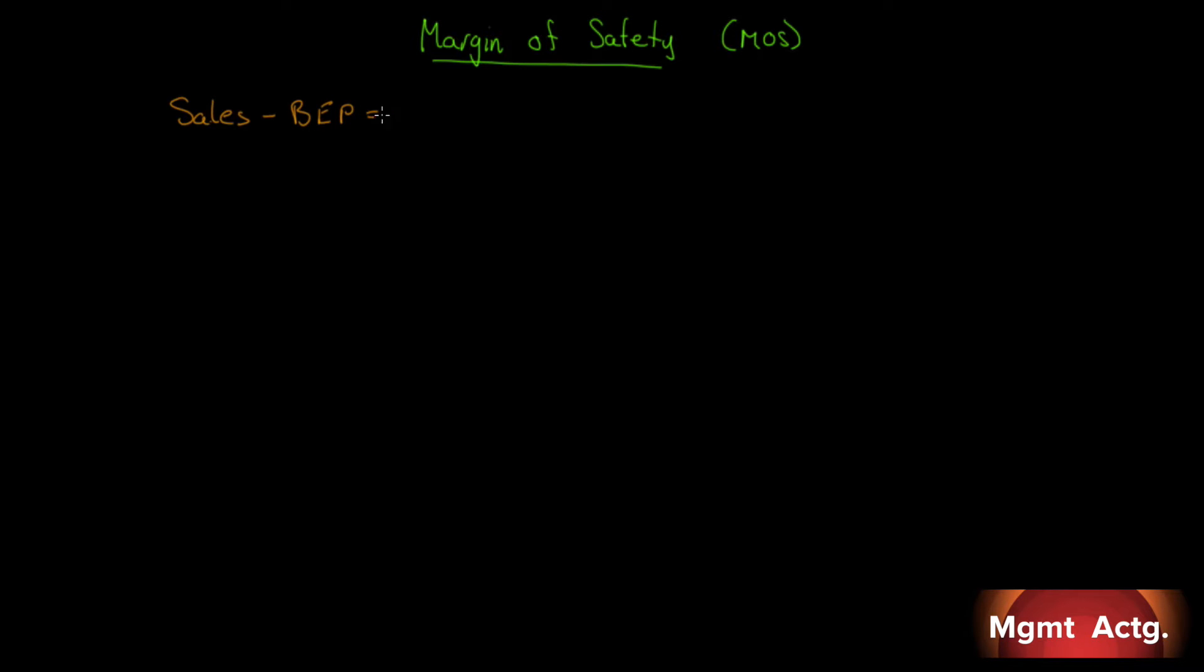Really simple. Sales minus our break-even point in dollars equals our margin of safety. Once we have that, if we take our margin of safety and divide it by sales, we get our margin of safety percentage. Couldn't be easier.